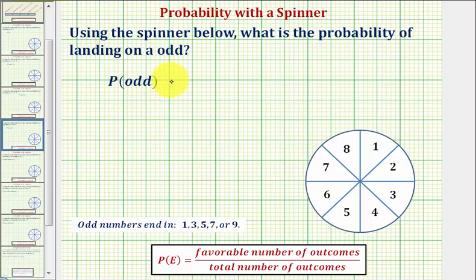So for the probability of spinning an odd, let's first determine the total number of outcomes. We're looking at our spinner. Notice how it's divided into eight equal sized sections, each section numbered from one through eight, and therefore there are eight total possible outcomes.